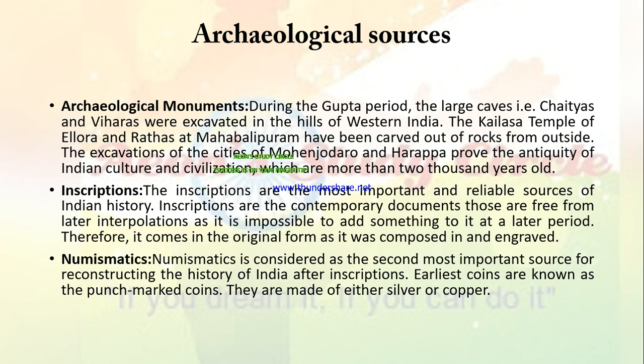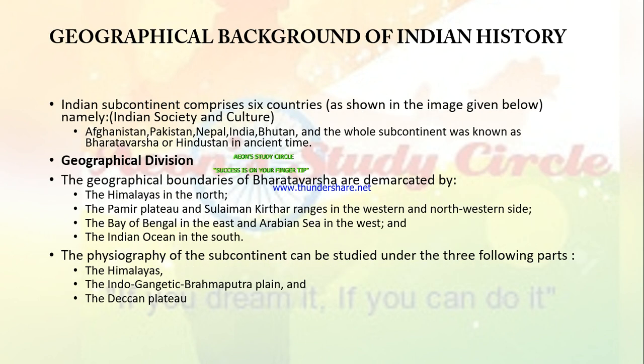The third is numismatics. Numismatics is considered the second most important source for reconstructing the history of India after inscriptions. The earliest coins, known as punch-mark coins, are made of either silver or copper.